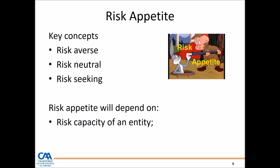Risk appetite will depend on the risk capacity of an entity — how much risk can a company be exposed to? A company generating $100 million in revenue versus one generating $5 million in revenue will have totally different risk appetites. Similarly, a company with high operating leverage versus one with low operating leverage will have different risk capacities. High operating leverage means a business is sitting on a high fixed cost level, so their risk appetite might be quite low because of their capacity.